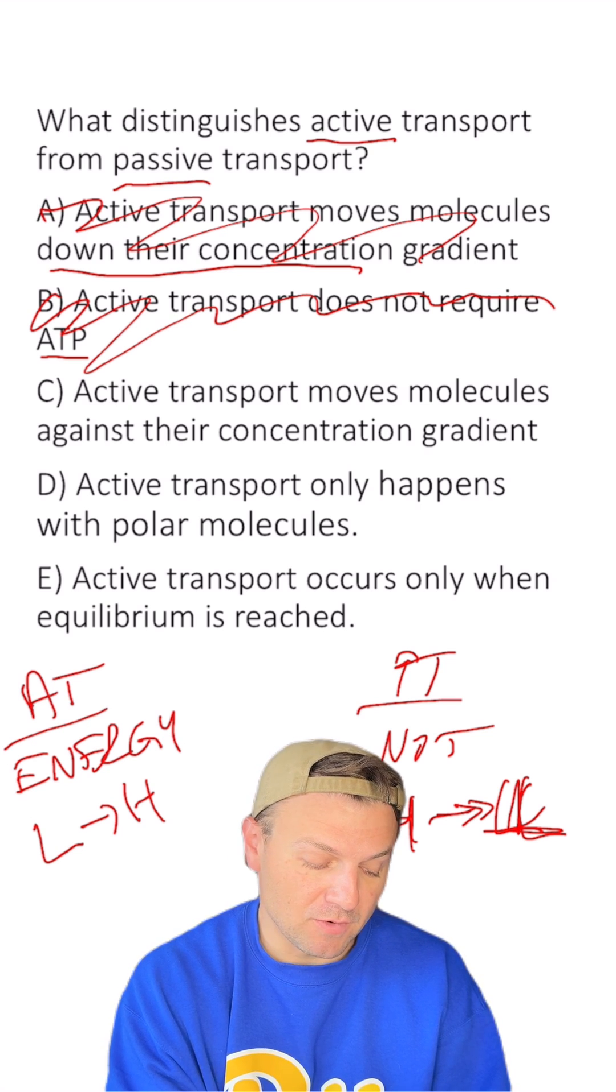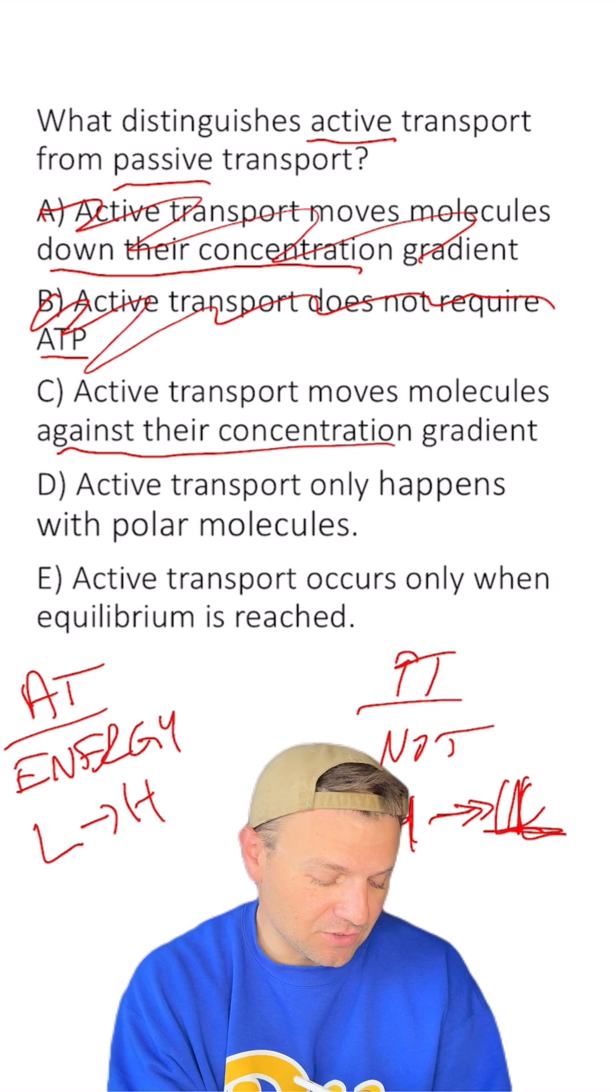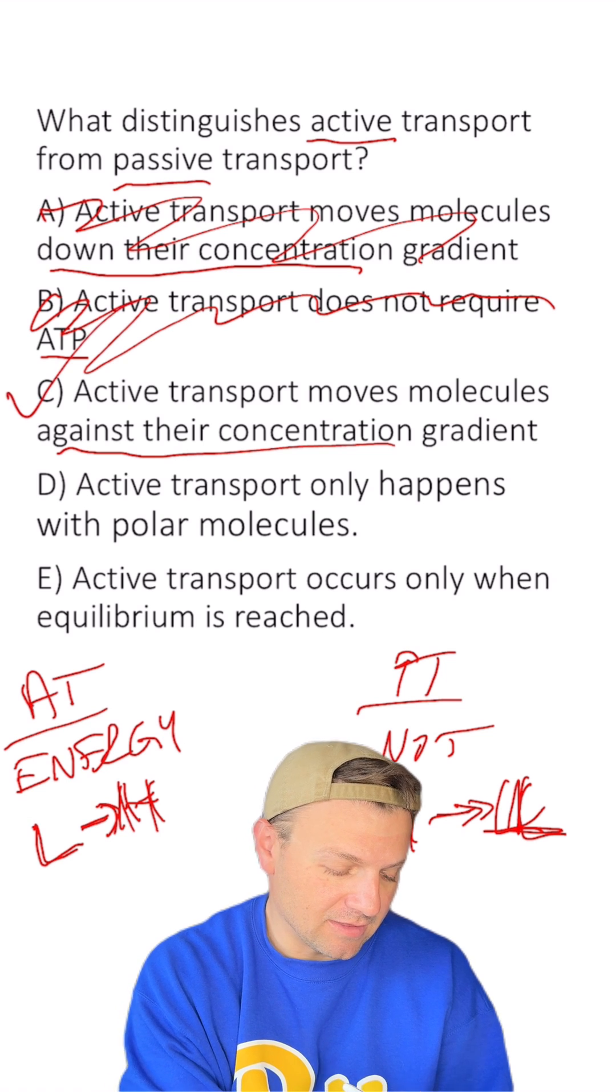C, active transport moves molecules against their concentration gradient. That against their concentration gradient means from low to high. And I think this is our answer.